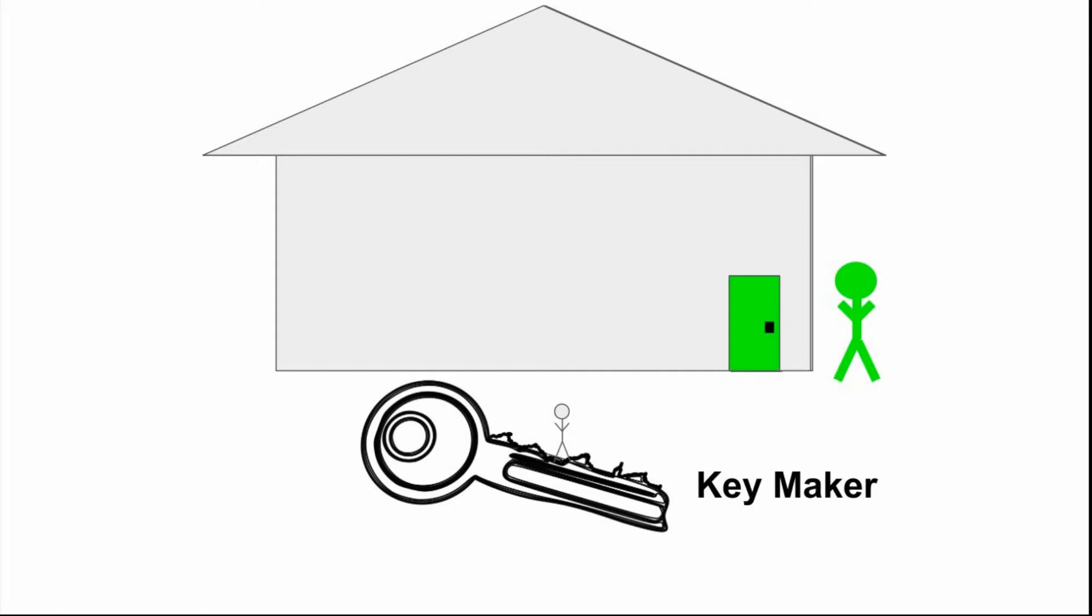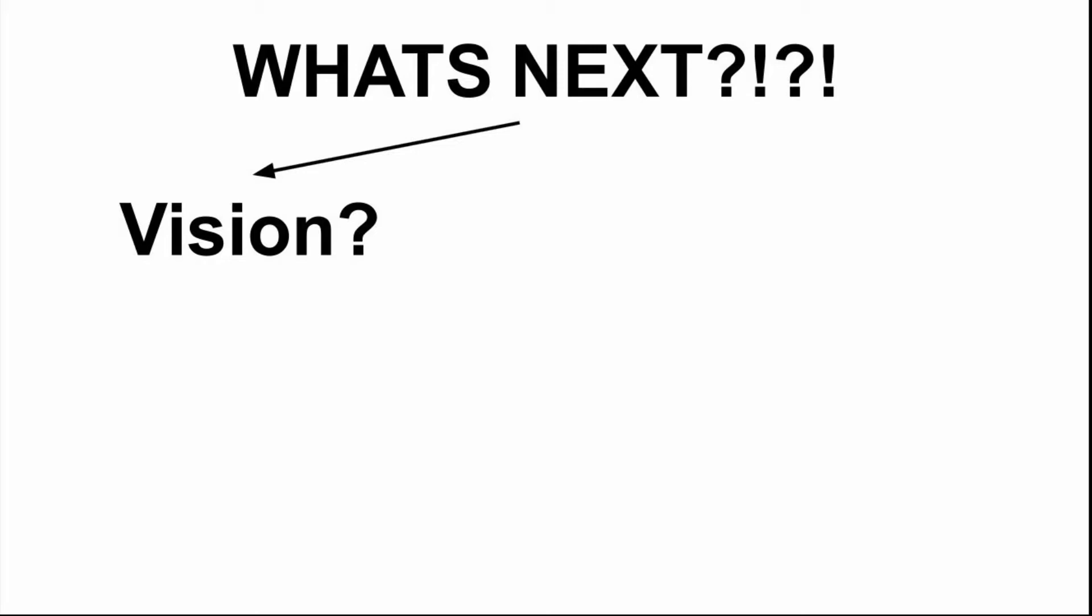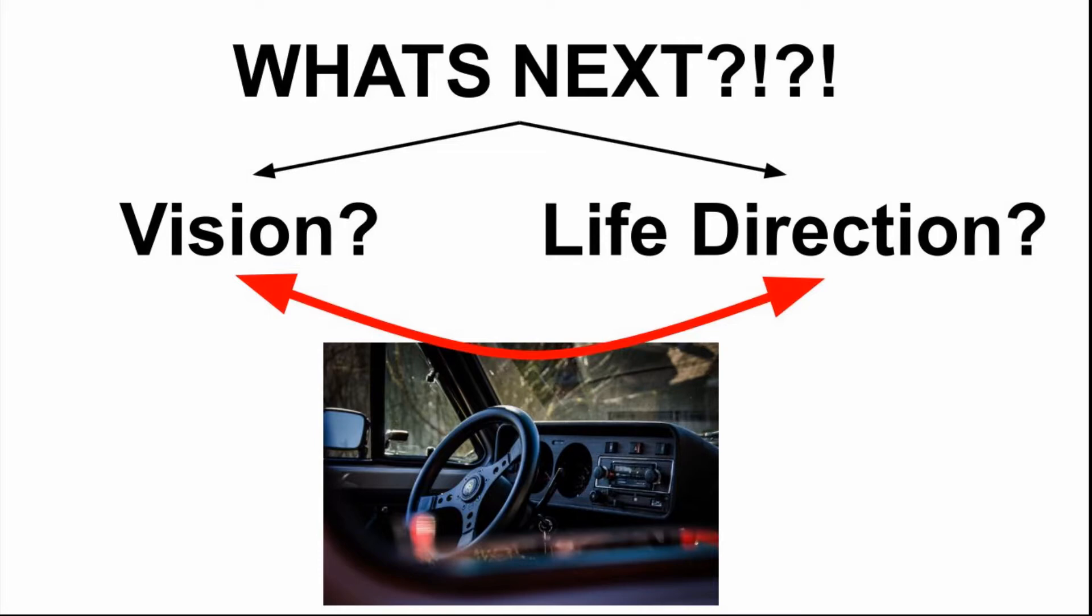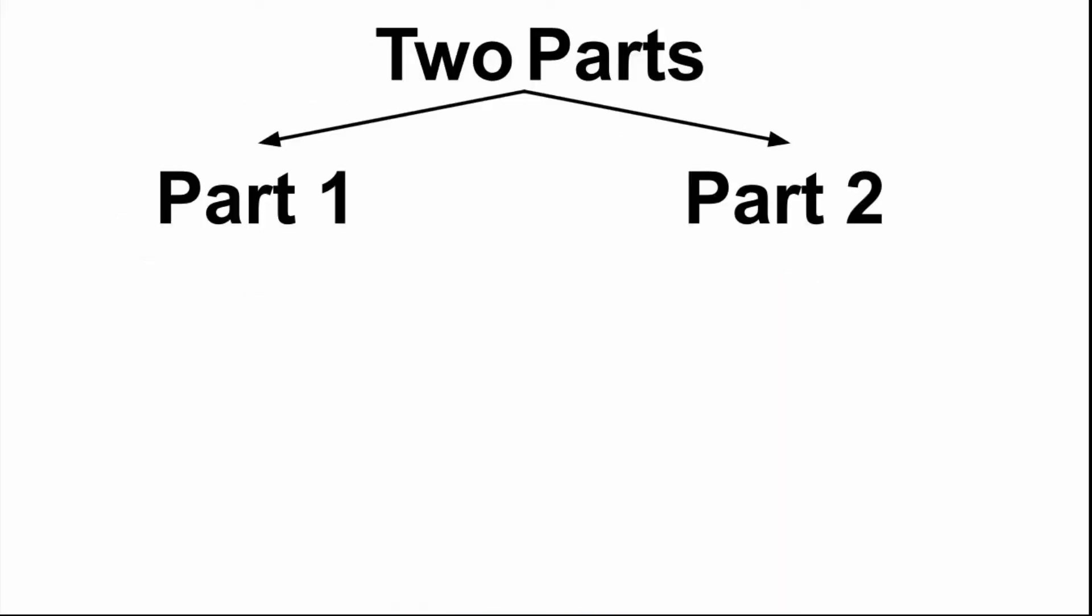So what's this talk about today? The most important first question we all have to answer before doing anything in our life or with our life is, what's next? And this question makes or breaks every human being, and it will come to us at different times in our life in one of two ways usually. The first way we hear it is vision. What's your vision, people will ask you. What do you want out of life? And the second way we hear it is, what's your life direction? When we try to answer one before the other, it's like trying to start a car that has no fuel in it.